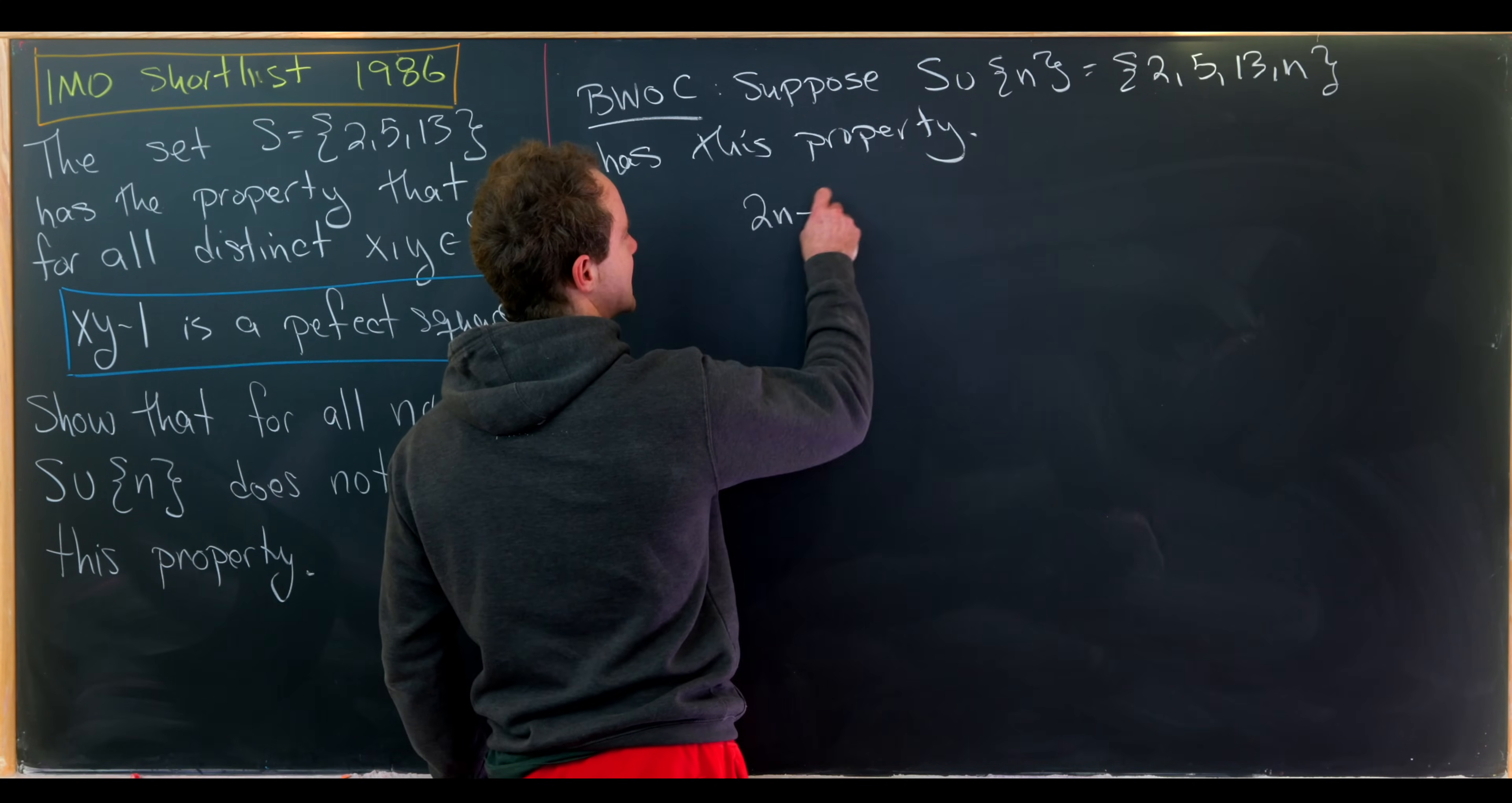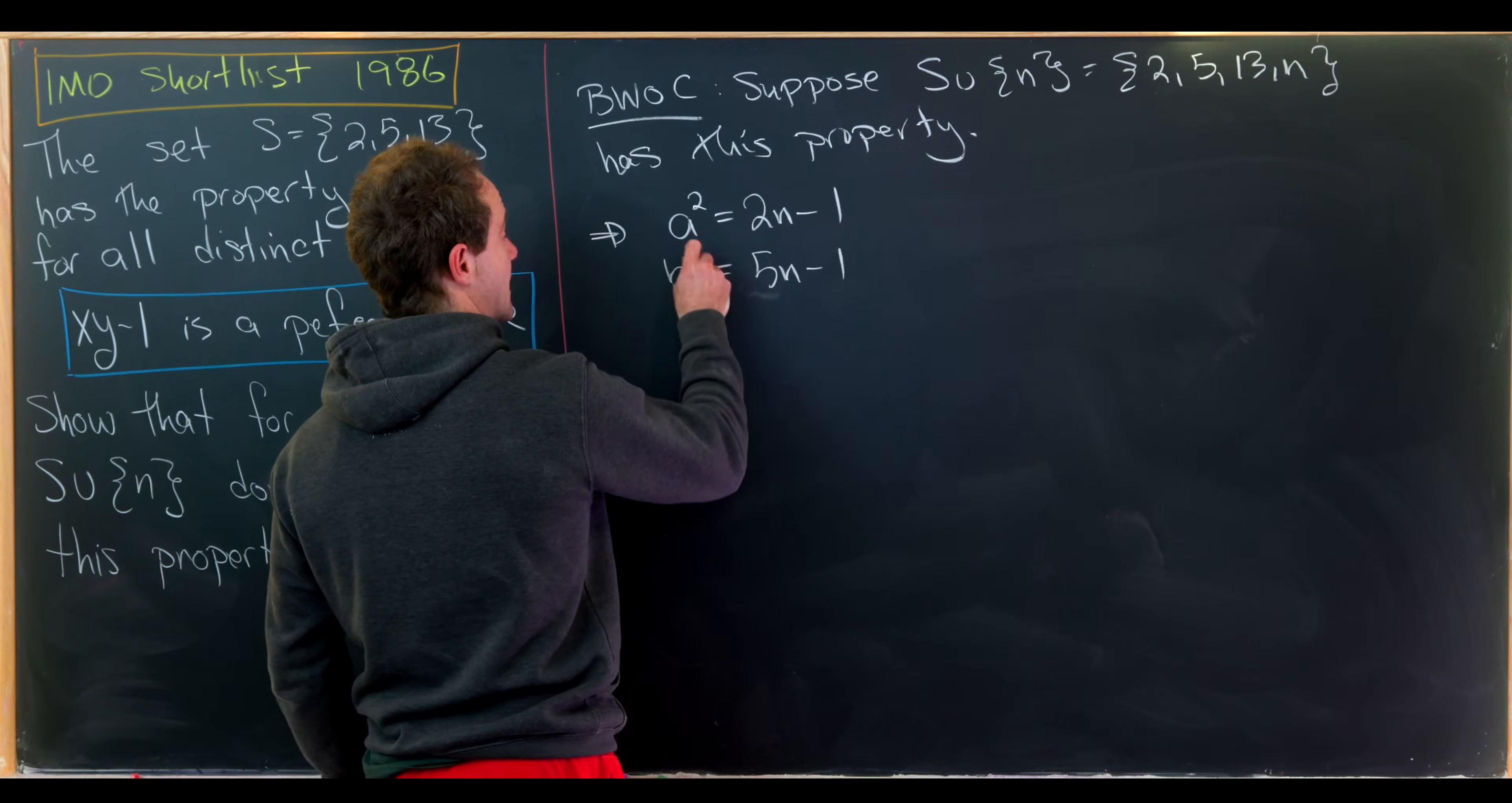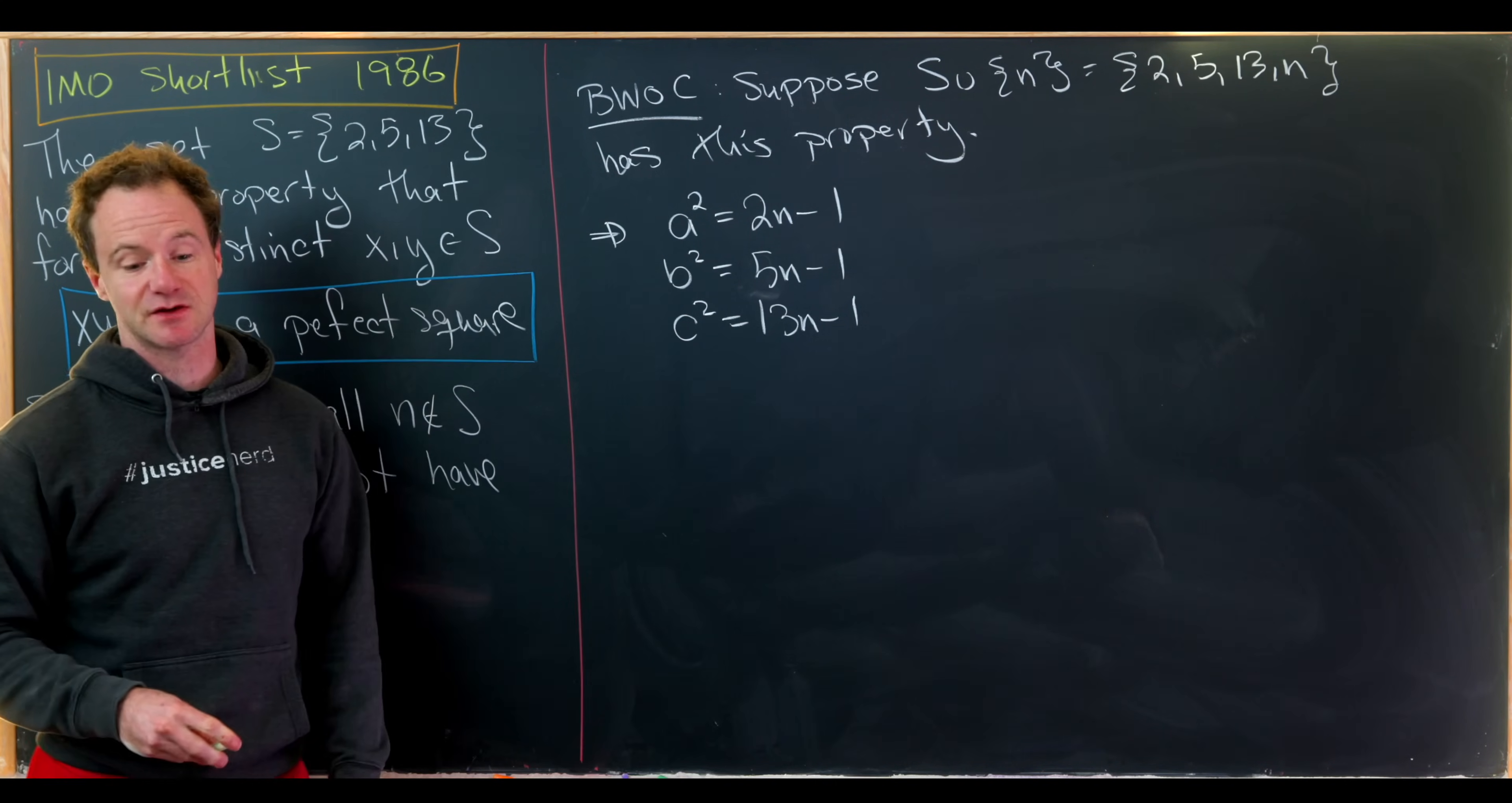We have 2 times n minus 1 is a perfect square, so I'll set it equal to a squared. We have 5 times n minus 1 is a perfect square, I'll set it equal to b squared. And finally, 13 times n minus 1 is a perfect square, I'll say that's equal to c squared.